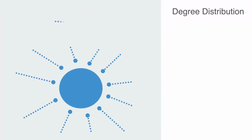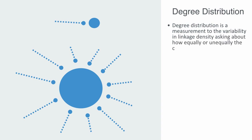More recently, attention has shifted from network connectance to the idea of degree distribution. Degree distribution measures the variability in link density — asking how equally or unequally the connections are distributed within the system. For example, koalas are very specialized feeders, feeding on only a few species of eucalyptus, whereas raccoons feed on a wide variety of species including birds, eggs, crayfish, plants, and various invertebrates — thus having many more connections within the food web as consumers.